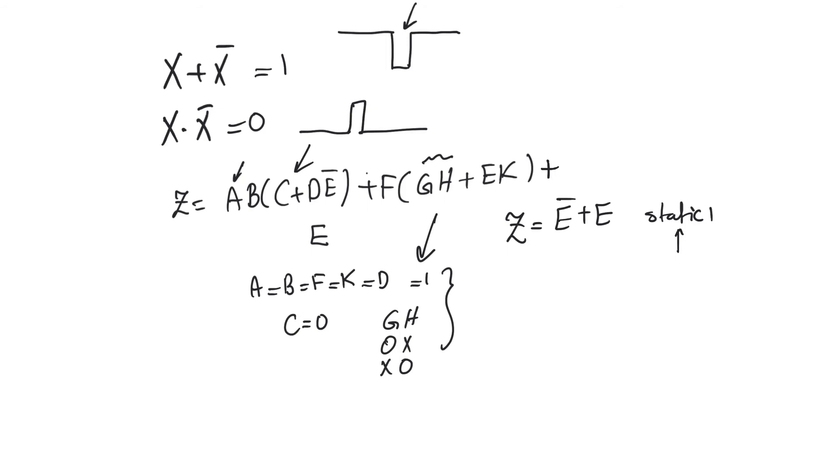So when we looked at this particular example, we found that there is a transition in which E makes from 0 to 1 or 1 to 0, and we rely on E in both cases to fix the value of the function at 1. However, we see a glitch because of the differential delay between E and E bar. So under these conditions, for all of the other variables, whether the value of E is 0 or 1, the function has to be 1. But if we depend on E, whether it is 0 or 1, to fix the value of the function at 1, it will glitch because of differential delay.